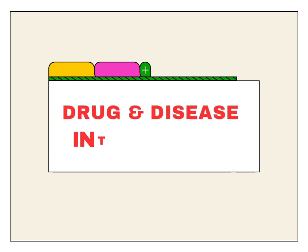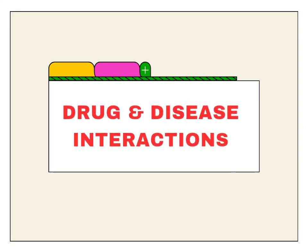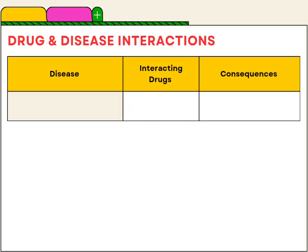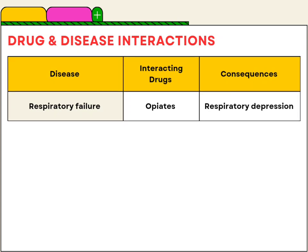Let's discuss the drug and disease interactions and learn about their consequences. In case of respiratory failure, we need to avoid opiates because it can result in respiratory depression.